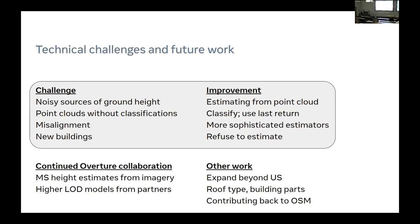We'll continue our collaboration with Overture partners — for example, using Microsoft height estimates from imagery and higher level-of-detail models from other partners to improve building height predictions. Currently our work is only within the US, but we plan to expand beyond the US. We'll also work on rooftop prediction and building part prediction to better differentiate the height of buildings versus the height of parts on buildings. The data currently sits in Overture releases, but we welcome any support for putting it back into OSM. We've already connected with the Rapid team to provide a more convenient way for users to tag building height estimates back into OSM.